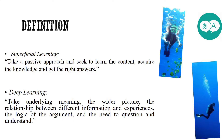These are the definitions of superficial and deep learning. Superficial learning: the students take a passive approach and seek to learn the content, acquire the knowledge, and get the right answers. Deep learning: the students take in the underlying meaning, the wider picture, the relationship between different information and experiences, the logic of the argument, and the need to question and understand.